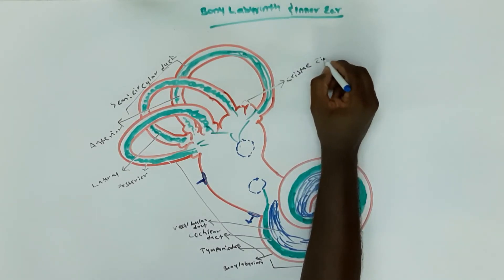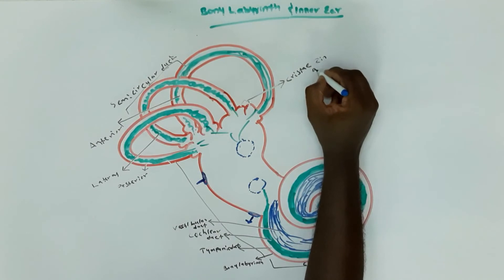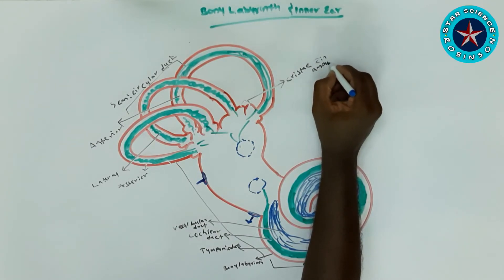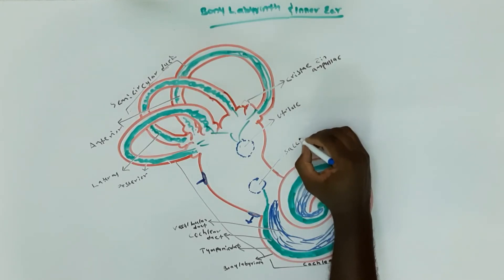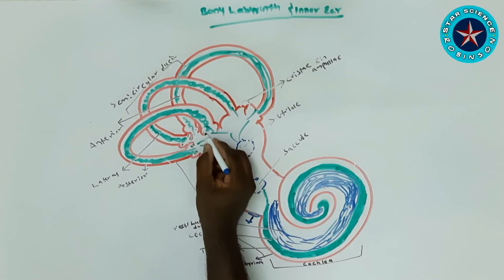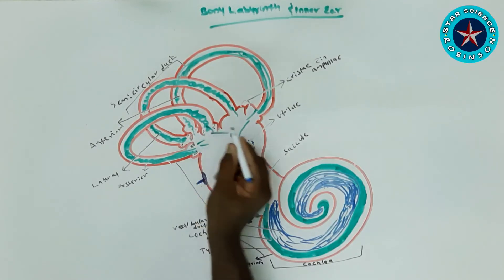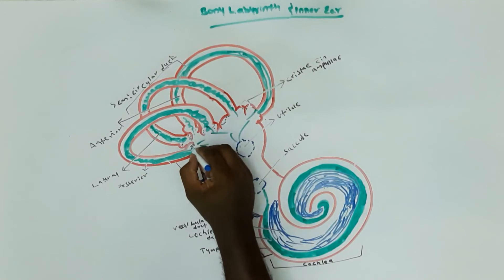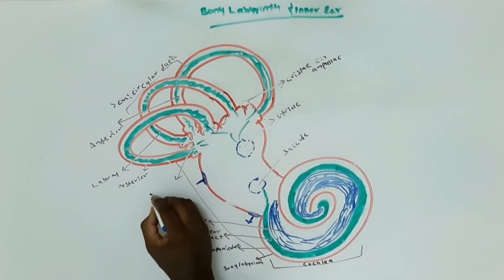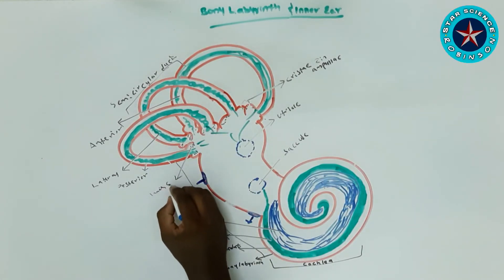The utricles are part of the balancing system and respond to changes in position of the head. They convert head movement into neural impulses which the brain can interpret. The hair cells will activate in the ampulla when there is movement of the head or body.